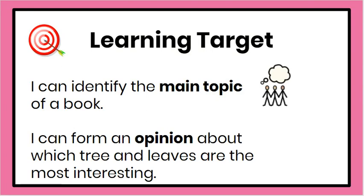Your learning targets for today are: I can identify the main topic of a book, and I can form an opinion about which tree and leaves are the most interesting. Now read it with me: I can identify the main topic of a book. I can form an opinion about which tree and leaves are the most interesting.